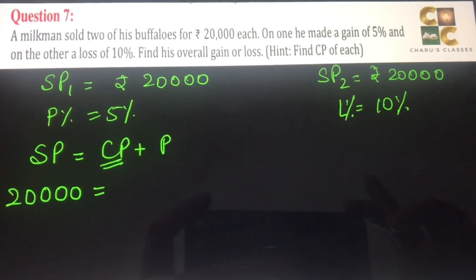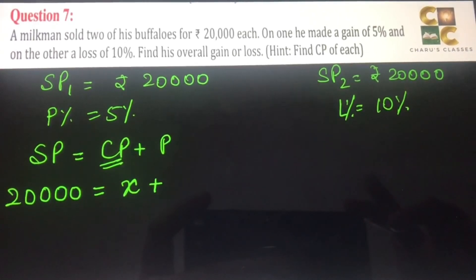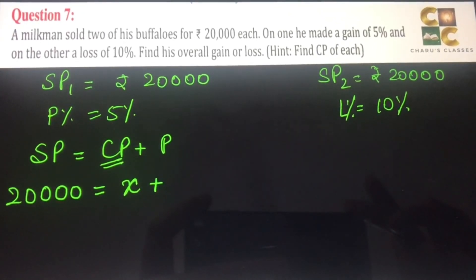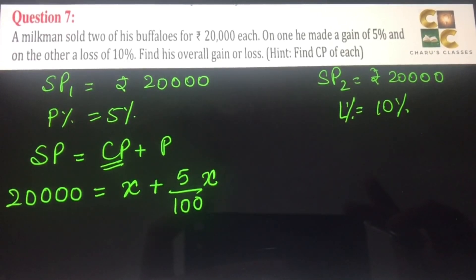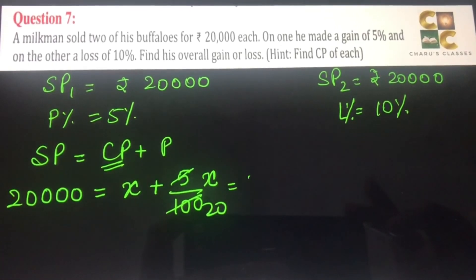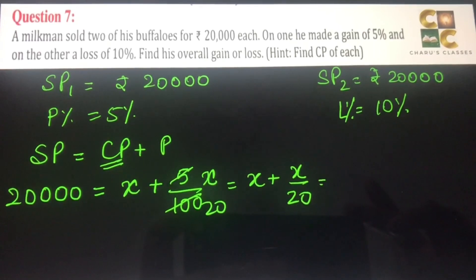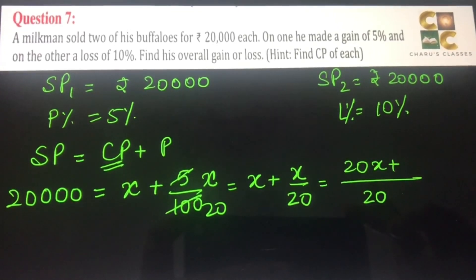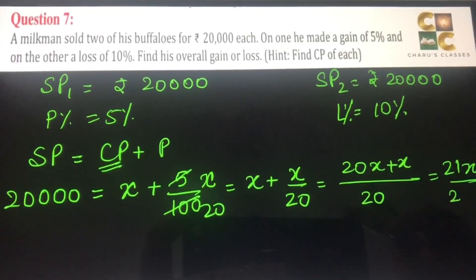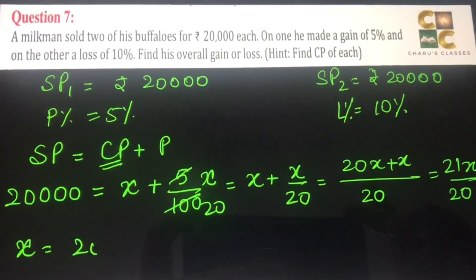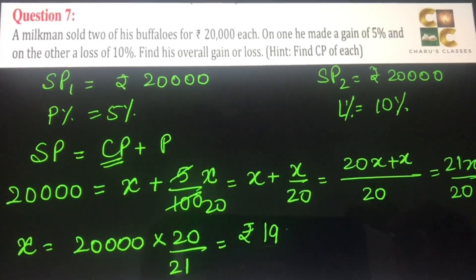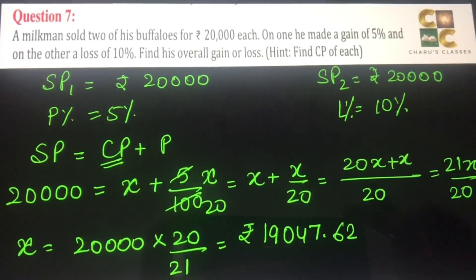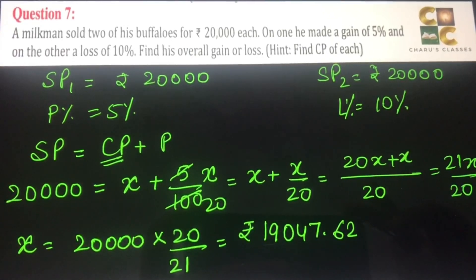In that case, 20,000 which is SP equals X plus the profit. The profit percentage is always counted on the cost price, so profit is 5% of CP which is X. So this is X plus X by 20. We take 20 as common denominator, this is 21X by 20. So X will be 20,000 times 20 by 21. If you solve this, you get rupees 19,047.62. This is the cost price of the first buffalo.